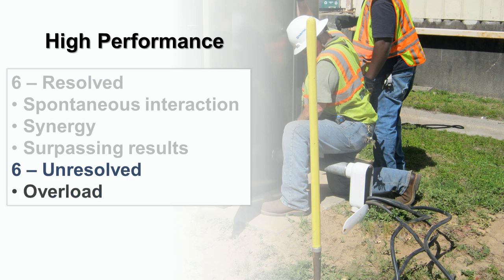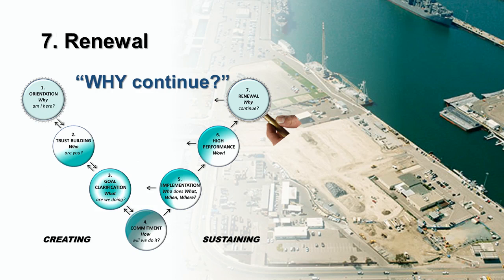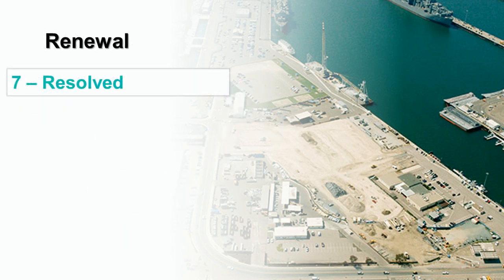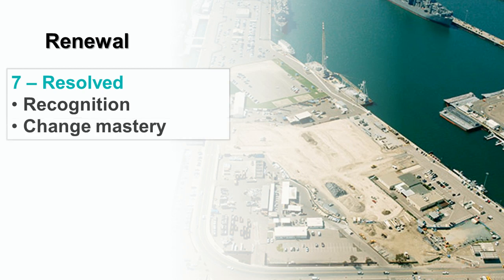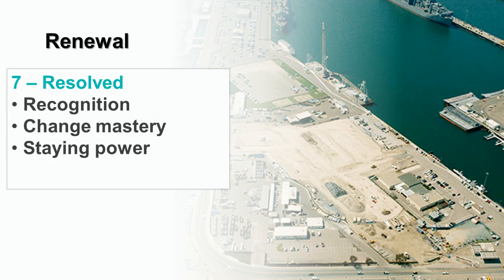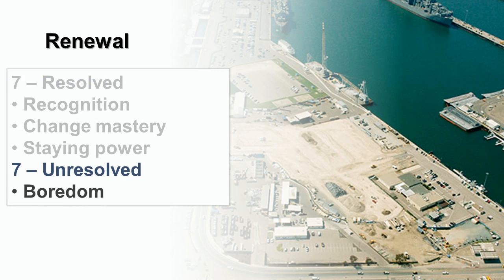When high performance challenges are unresolved, you will see overload and disharmony. Step 7: Renewal. The renewal stage involves taking a step back to assess the team, work quality, and processes. It's about coping with changes in team membership, the nature of the work, and the environment. It also includes acknowledging and appreciating the energy invested in the work so far. Renewal doesn't happen only at the end of a project cycle; assessing occurs continuously, including at transition points, milestone completion, fundamental changes in direction, team member changes, or shifts in external circumstances. When renewal challenges are resolved, you will see recognition, change mastery, and staying power. When unresolved, you will see boredom and burnout.